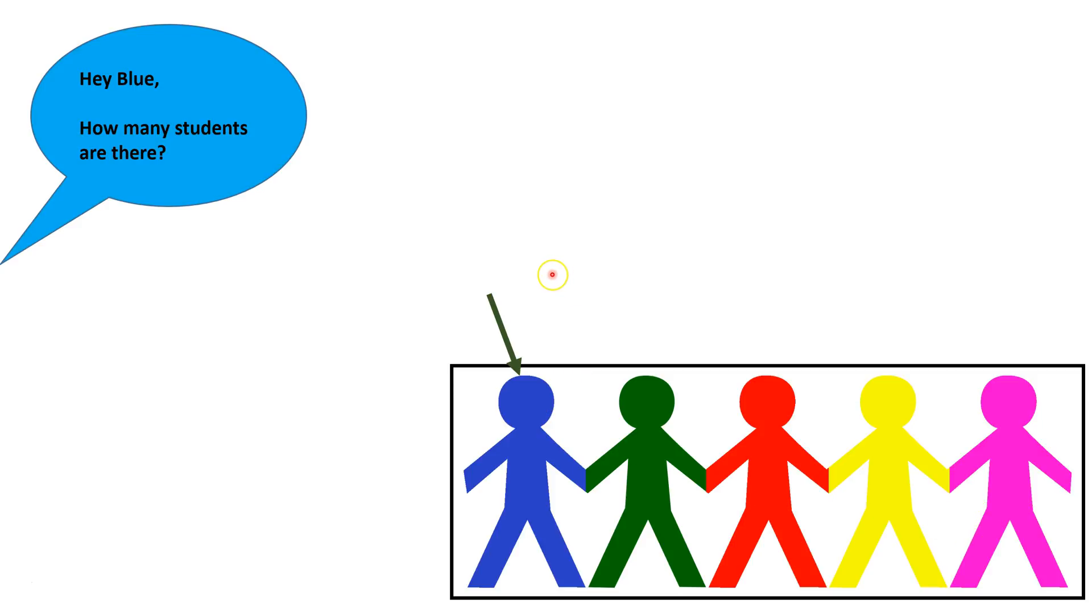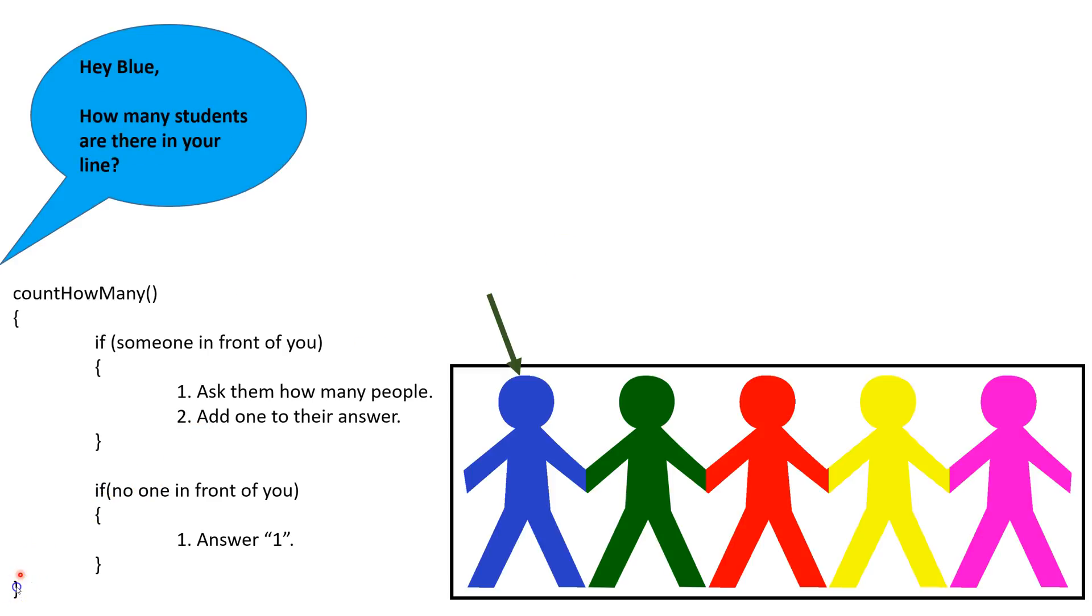Instead, Blue decides to handle the problem recursively. The recursive algorithm that he comes up with, count how many, has two parts.